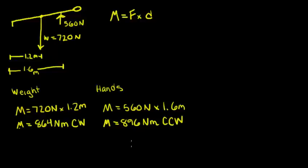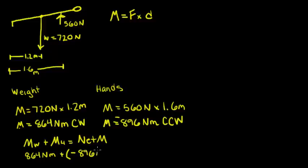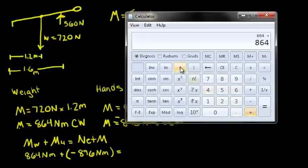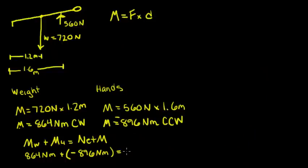Now, we can add the two of these moments up to find the total moment. But, because they're going in opposite directions, we need to make one positive and one negative. Let's make clockwise positive and counterclockwise negative. So, moment of the weight plus moment of the hands will equal the net moment. 864 newton meters plus negative 896 newton meters. This gives us negative 32 newton meters. And we just decided that negative equals counterclockwise direction.